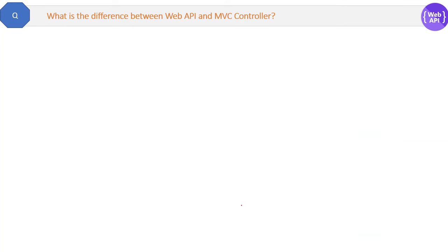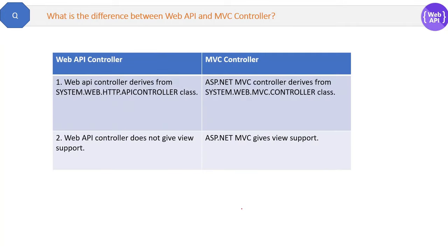What is the difference between WebAPI and MVC controller? WebAPI also has a controller, and in a normal ASP.NET MVC application there is a controller too. The WebAPI controller derives from System.Web.Http.ApiController class, while ASP.NET MVC controller derives from System.Web.Mvc.Controller class. The main difference is WebAPI controller does not give view support, since WebAPIs do not need views. ASP.NET MVC gives view support because in MVC applications we have views.